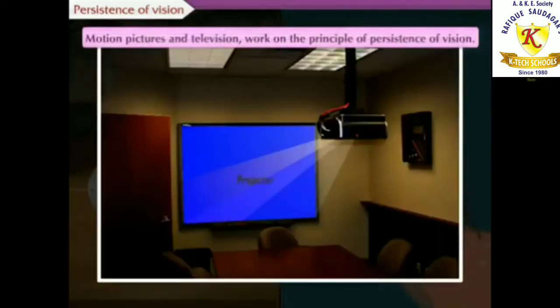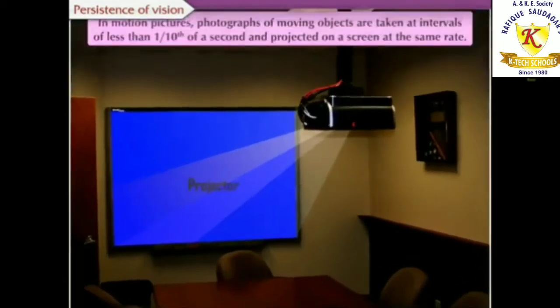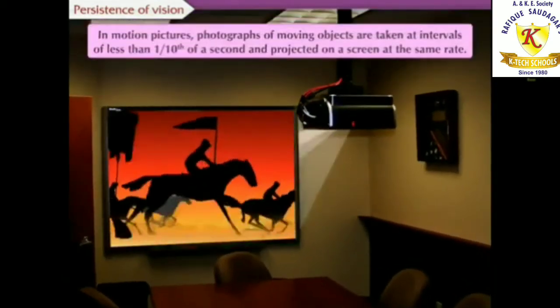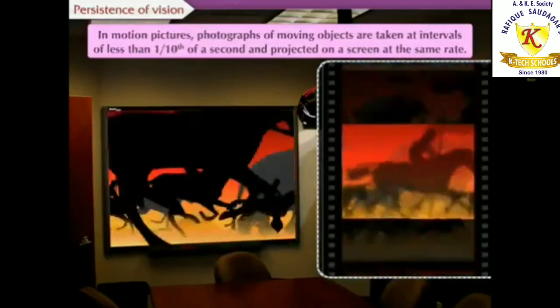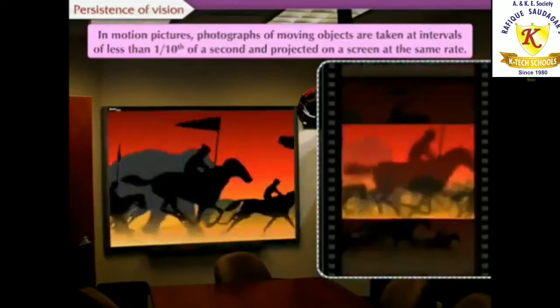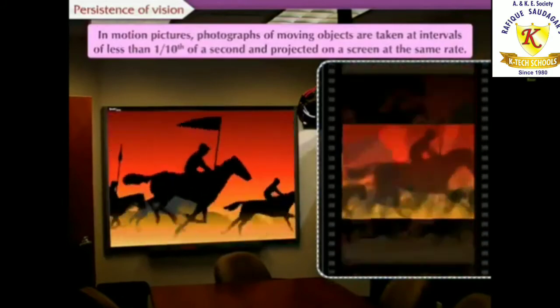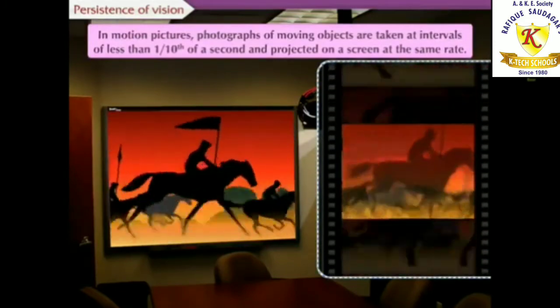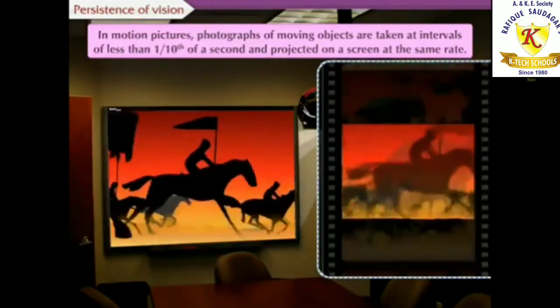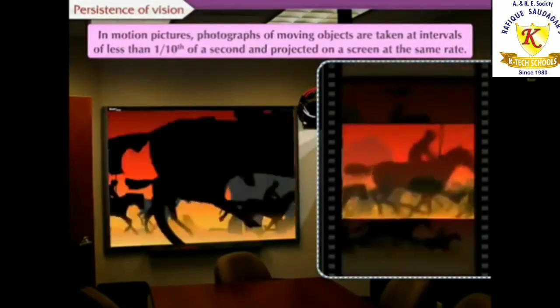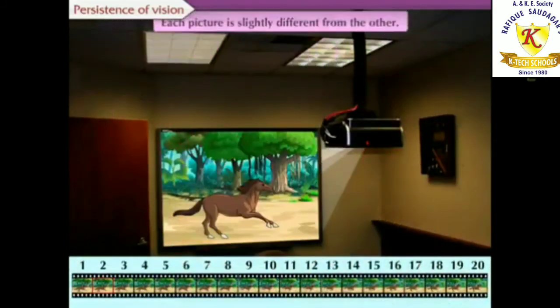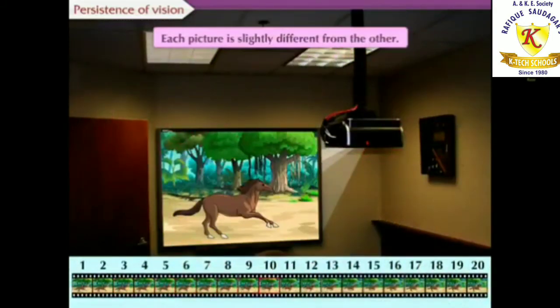Motion pictures and televisions also work on the principle of persistence of vision. In motion pictures, photographs of moving objects are taken at the interval of less than 1/10th of a second and projected on a screen at the same rate. Each picture is slightly different from the other.